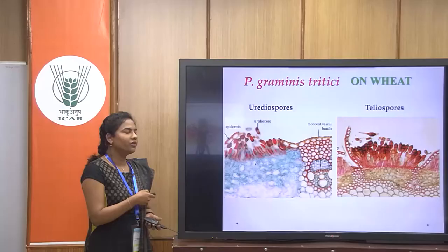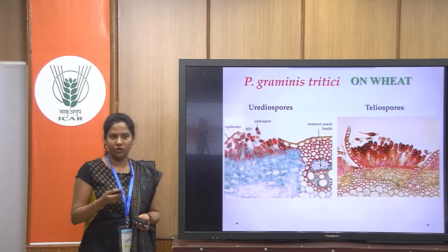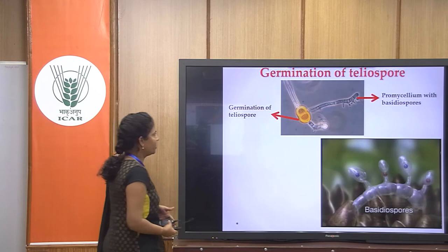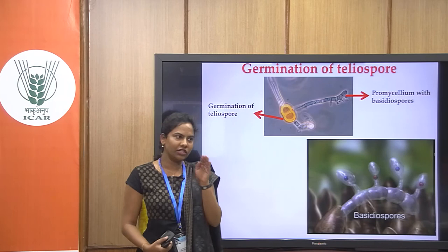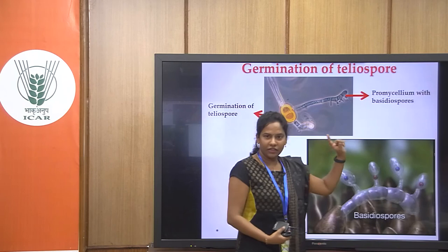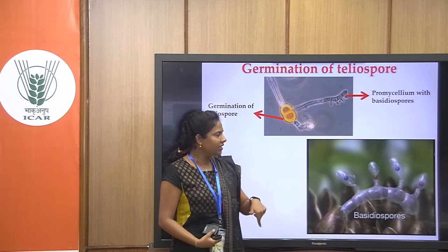In adverse conditions, the fungus starts producing teliospores instead. These teliospores are sexual spores with a very thick wall and two cells. Teliospores have the capacity to sustain adverse climatic conditions. From teliospores we get basidiospores. On germination of the teliospore, you can see the promycelium, which we have already discussed. The promycelium is divided into four cells, on each of which a small sterigma is formed, bearing the basidiospores.